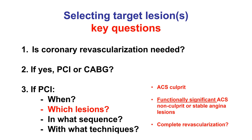Moving on to the question of which lesions should be revascularized when there is more than one. This depends on whether the lesions are culprit for acute coronary syndromes or not. If the patient presents with more than one ACS culprit — which can sometimes be challenging to determine, as discussed in video 7.2 — all culprits should be treated during the index procedure. For non-culprit lesions and patients with stable ischemic heart disease, only lesions that are functionally significant should be treated, as coronary physiology studies have repeatedly shown there is no need to recanalize lesions not causing ischemia.